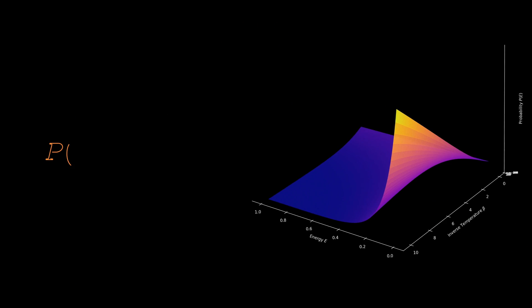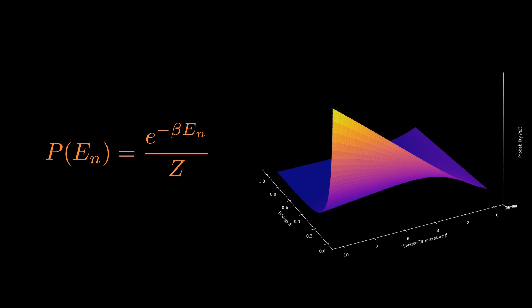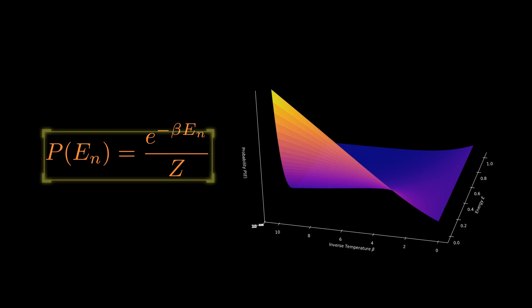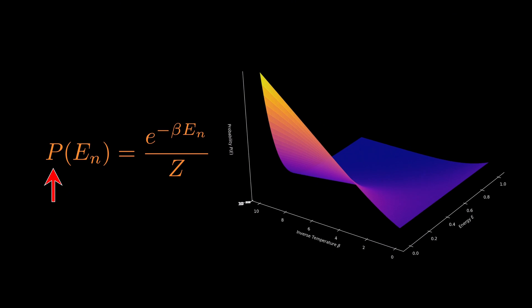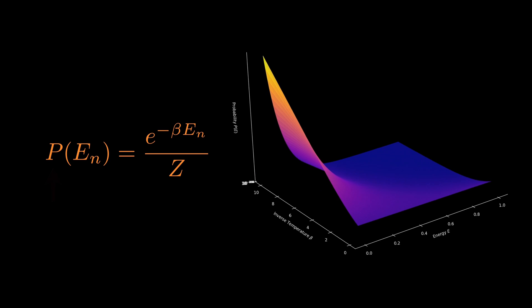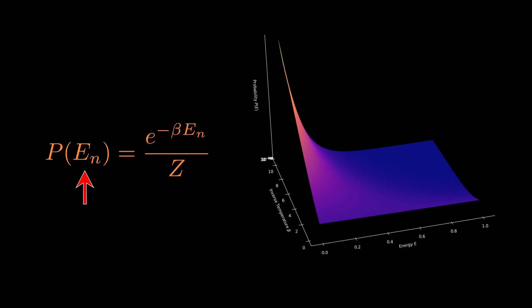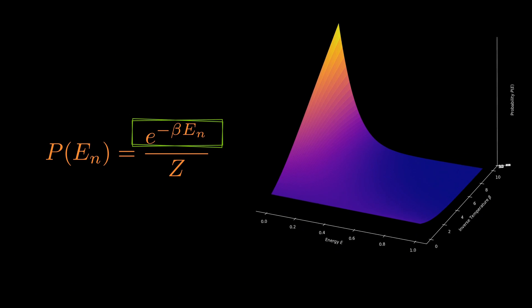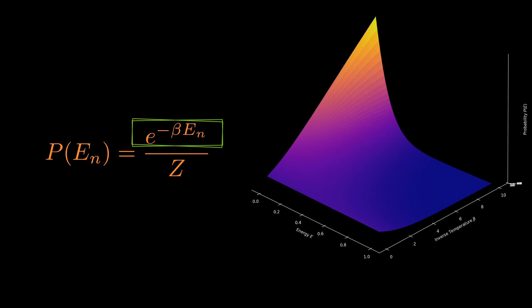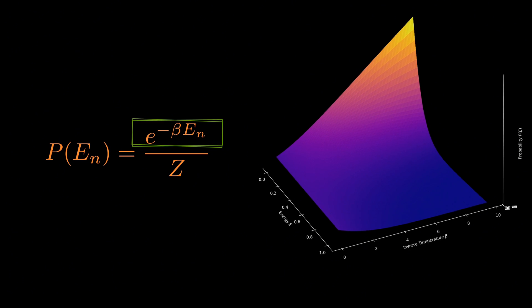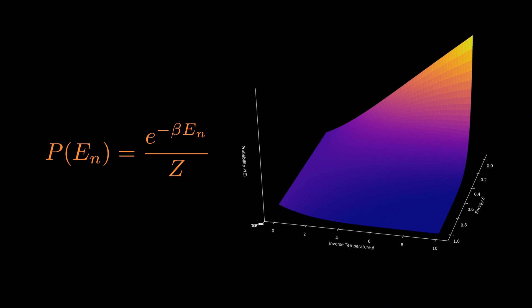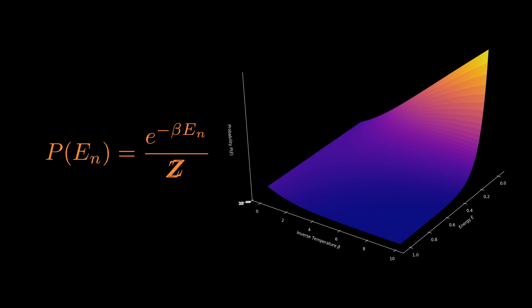Now, in quantum statistical mechanics, the probability that a system is found in one of its energy states is not random. It follows a specific rule. The probability of observing a state with energy E sub n is proportional to the exponential of minus the energy multiplied by a constant beta, which represents the inverse of temperature. Here, z is a normalization constant called the partition function, which ensures all probabilities add up to one.